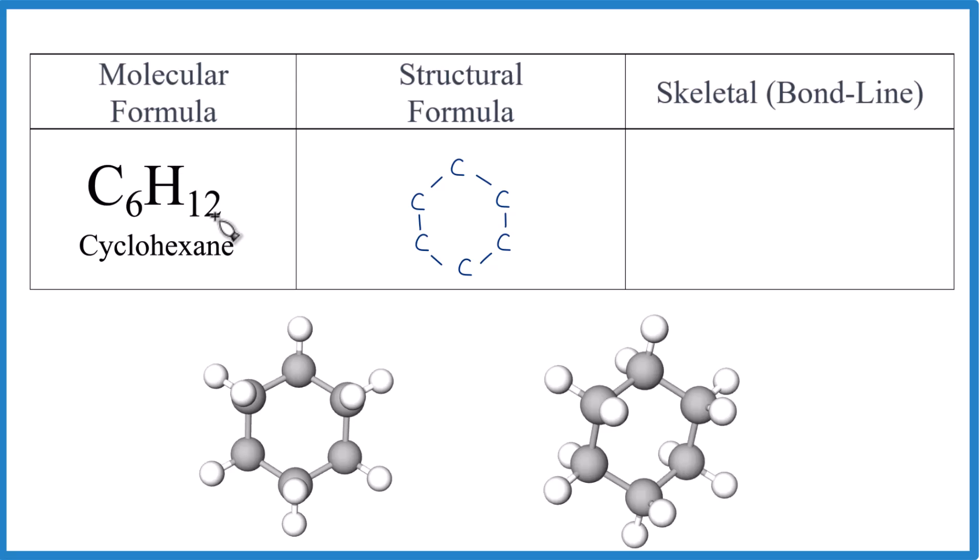And then we have 12 hydrogens. Carbon will have four bonds, always has four bonds. Easier to see over here. Carbon right here, we have one bond, two bond, three bond, four bond. Carbon always has four bonds.